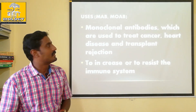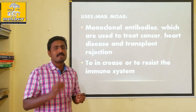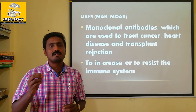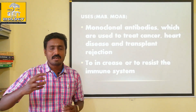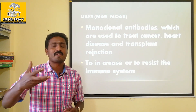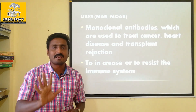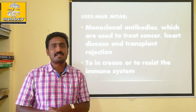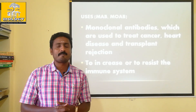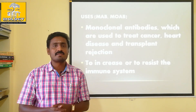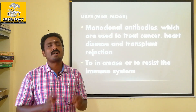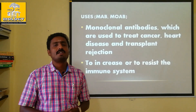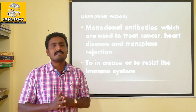What is cancer? Normally, one cell continues to multiply uncontrollably — that is cancer. It is a continuous, uncontrolled cell division.